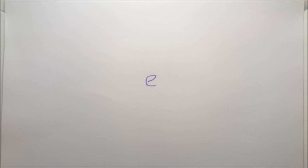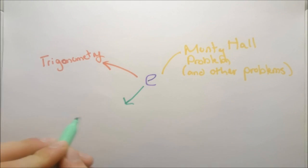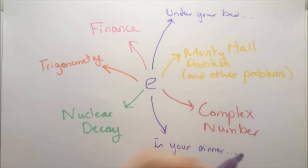e despite being a weird number appears everywhere, like literally everywhere. For instance in other problems such as the Monty Hall problem, trigonometry, modelling nuclear decay, relating to complex numbers, finance, under your bed, in your dinner. Ok maybe not the last two but the list of places where e appears goes on.